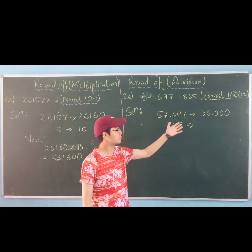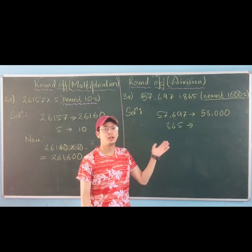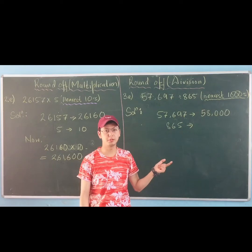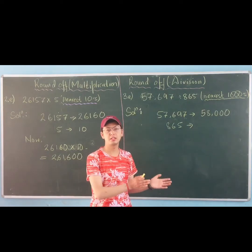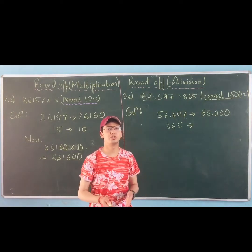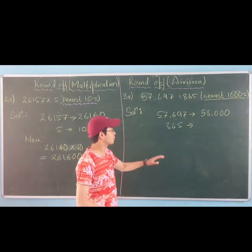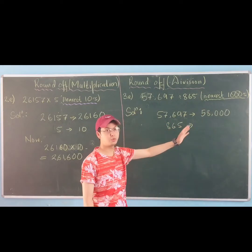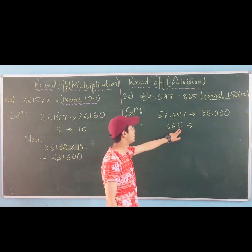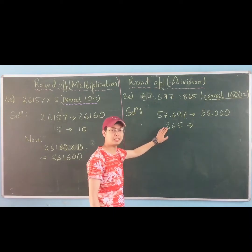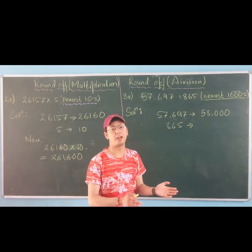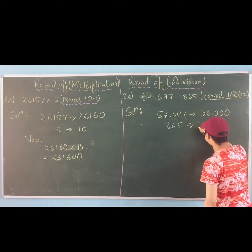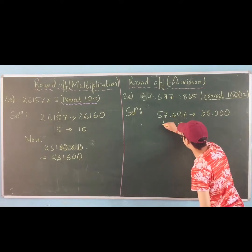If you want to change to the nearest thousand, you have to look at the digit which is in the hundreds place. In this case, the digit in the hundreds place is 8. Since 8 is greater than 5, that means you add 1 to the thousands digit. So 1 is added, and the remaining digits all become 0.